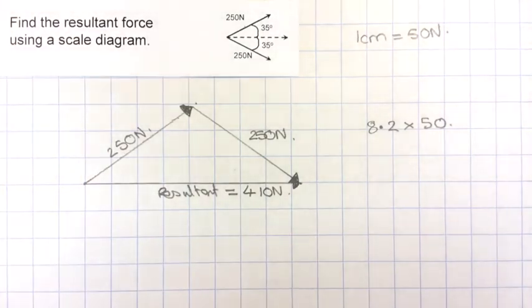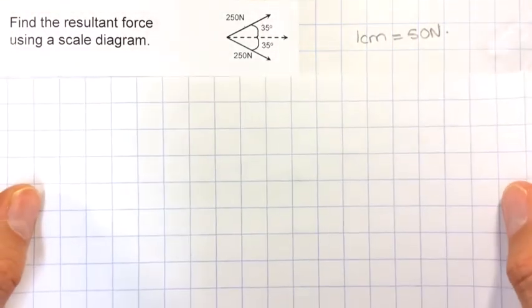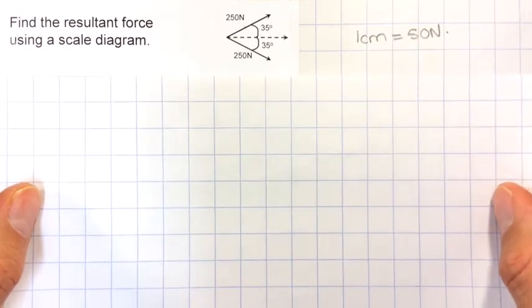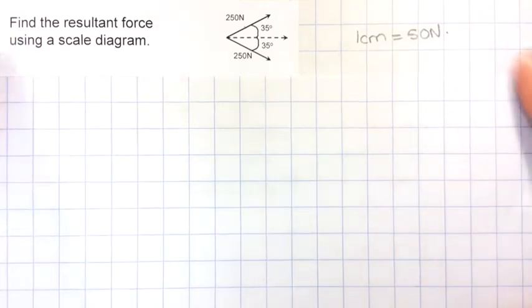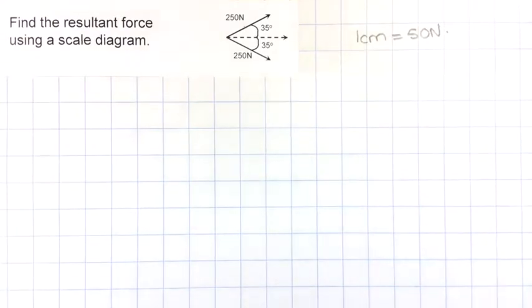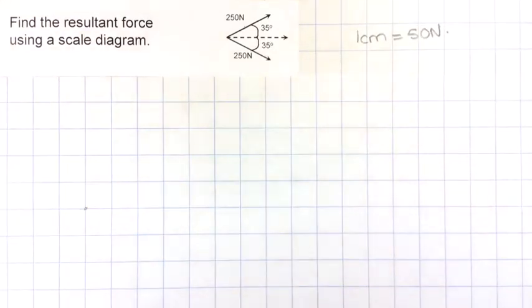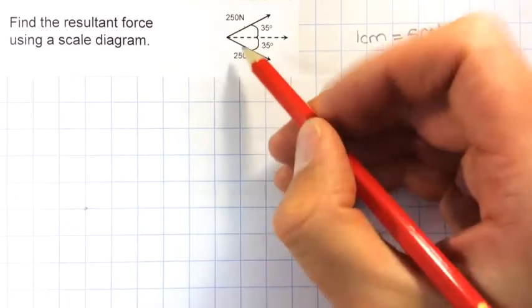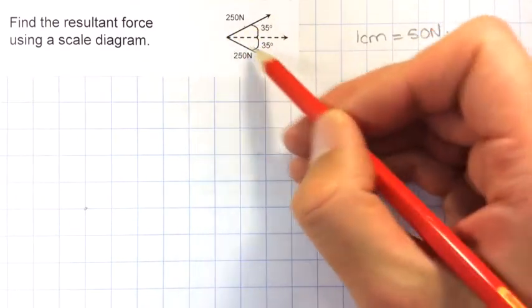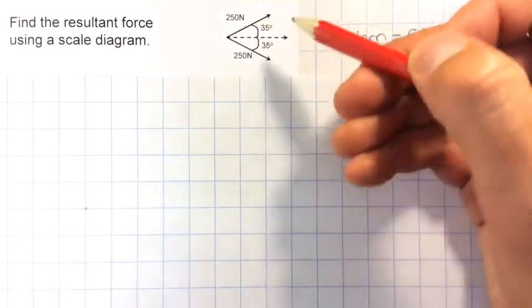I'm now going to show you the same thing again but using the parallelogram method. Let's get a new piece of squared paper. I'm going to stick with my same scale, so I'll choose my starting point here. Remember, in the parallelogram method we need to start both vectors from the same place to reproduce what we've got here.